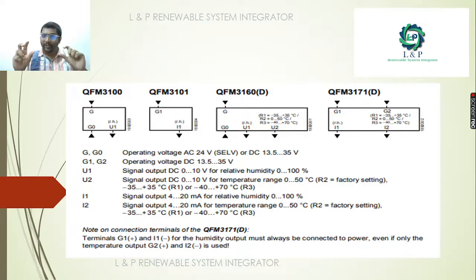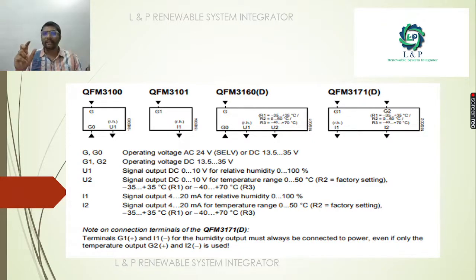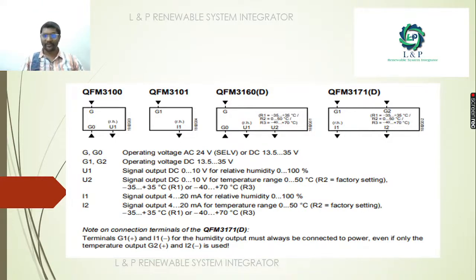Ideally, if you want only temperature monitoring, you can choose a sensor with only the temperature option. If you plan to monitor both temperature and humidity, you can go for a two-in-one sensor option that provides both.